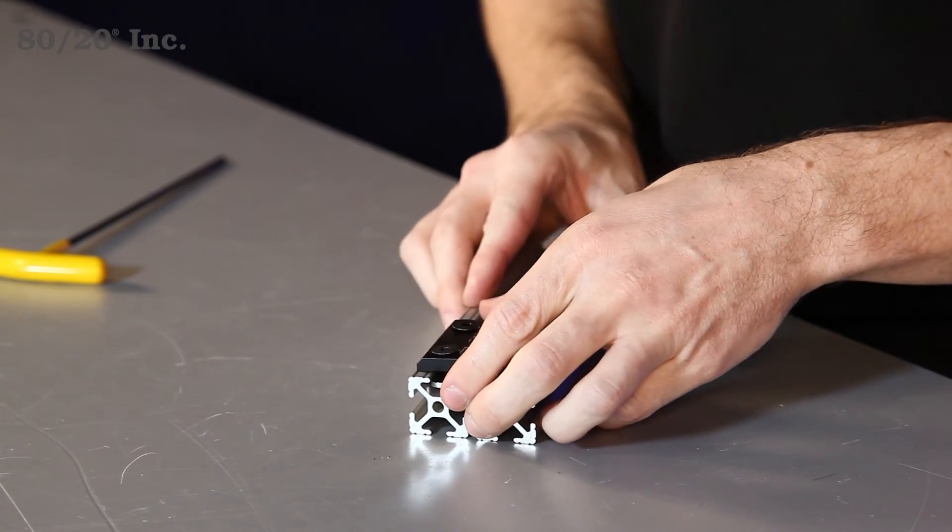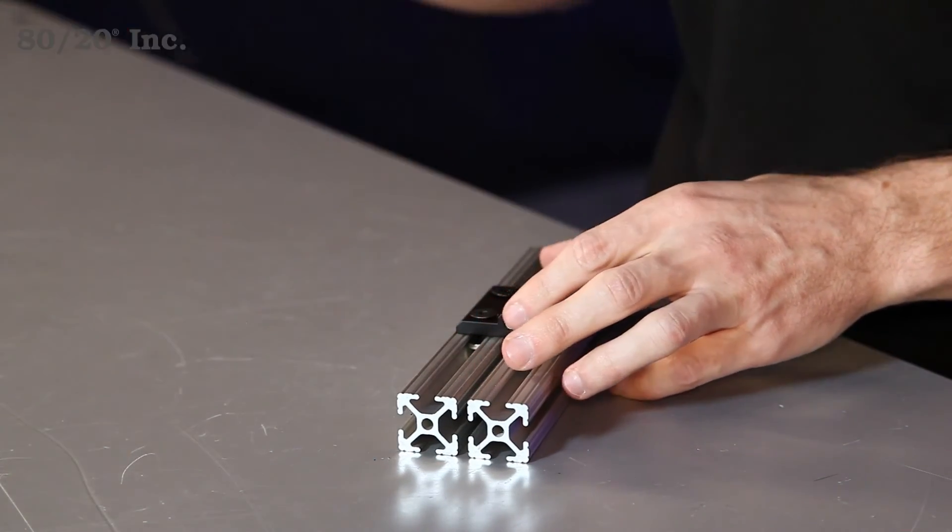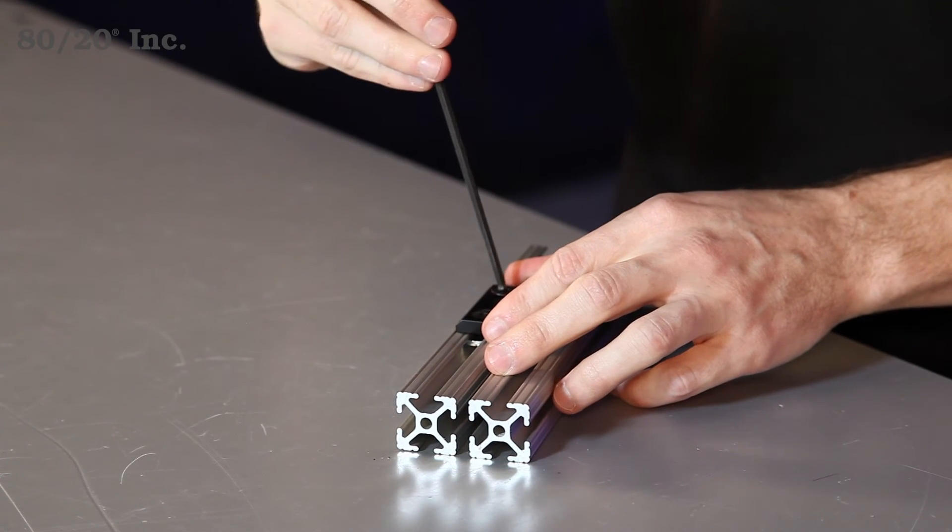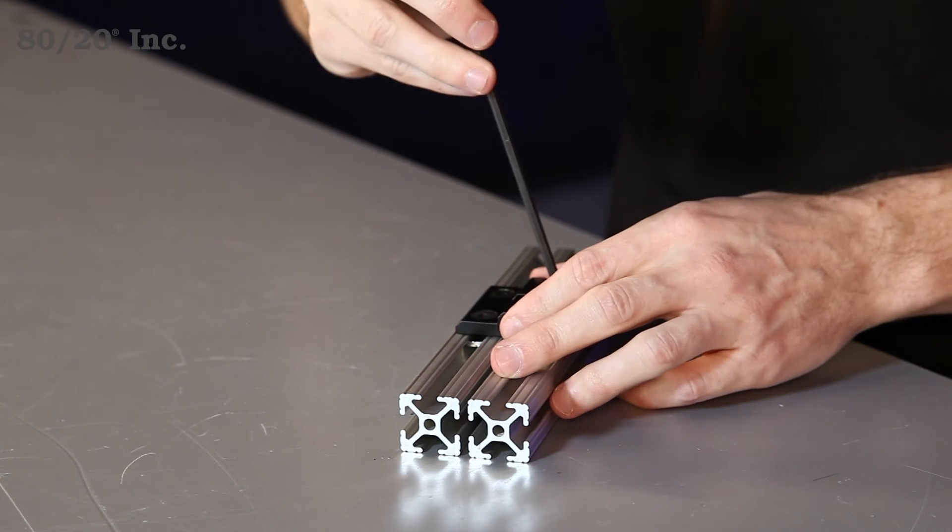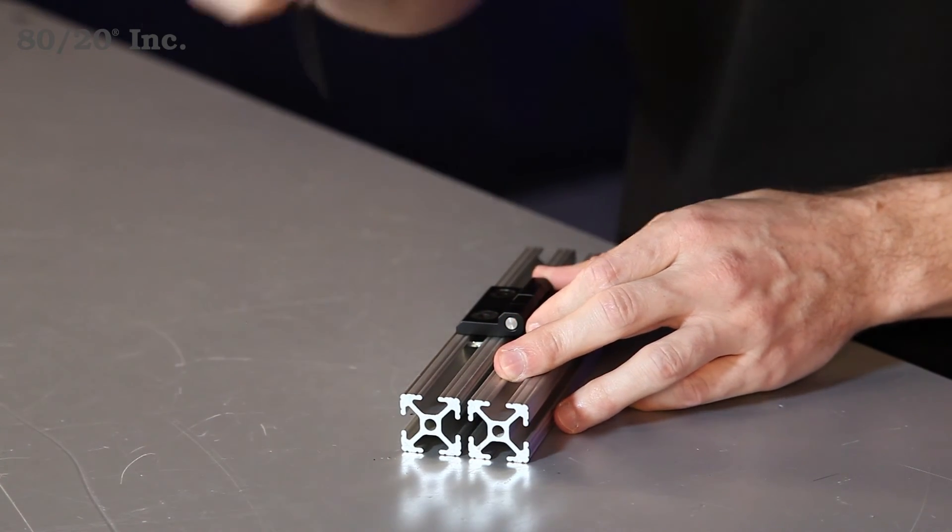Once we have those lined up and into position, we'll take our wrench and tighten down each bolt. Once all the bolts are tightened down, our hinge will be ready for use.